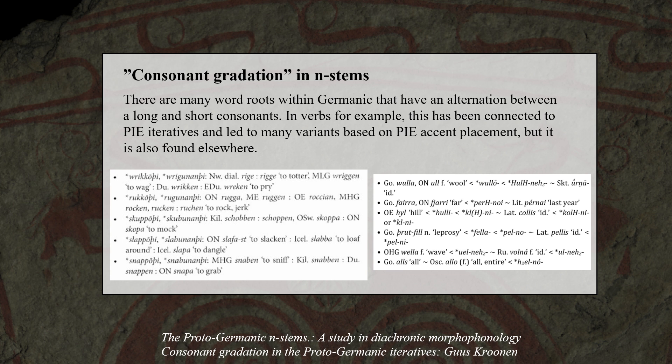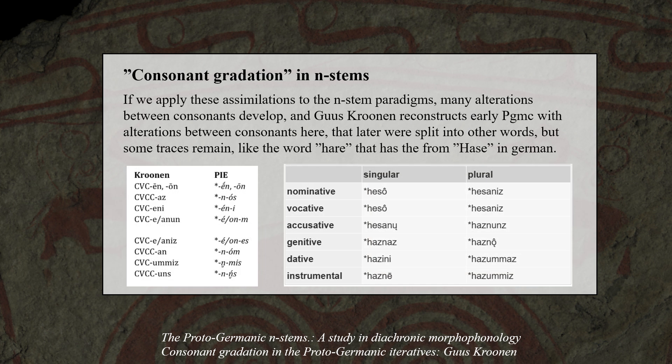Long consonants developed in Proto-Germanic according to complex rules based on Proto-Indo-European stress placement and so on, and these alternations led to a great number of word roots in Germanic that can show up both with a short and long consonant. These alternations have been explored in depth by Sjöskronen, and he suggests that n-stems once had a complex alternation between consonant length and ablaut within paradigms. If we apply these consonant assimilations as Sjöskronen reconstructs to n-stem paradigms, many alternations between consonants develop.